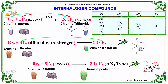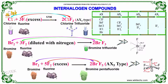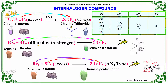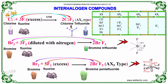Chlorine along with excess fluorine at 573 Kelvin forms chlorine trifluoride, which is AX3 type. Bromine with fluorine diluted with nitrogen forms bromine trifluoride. One bromine with excess fluorine forms bromine pentafluoride.